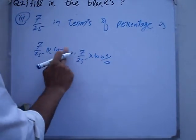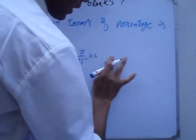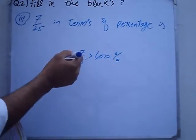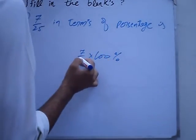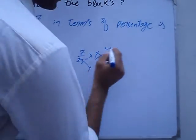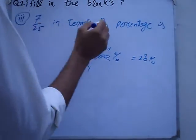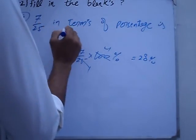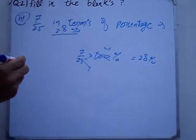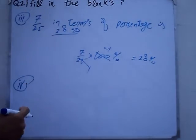7 over 25 into 100 equals 28%. Twenty-eight percent. Fill in the blanks part 4: 2/3 in terms of percentage.